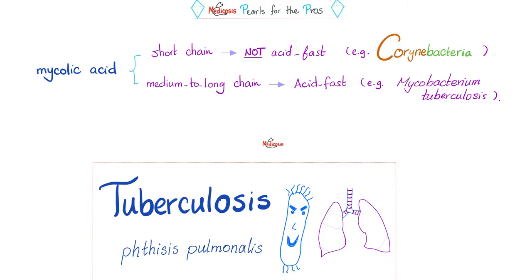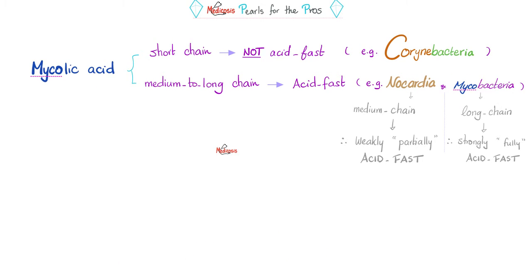In the video about Corynebacterium diphtheriae, I explained why Corynebacterium is not acid-fast — because it has a very short chain of mycolic acid — versus Mycobacterium tuberculosis and Nocardia, which are acid-fast because they have medium to long chain mycolic acid in their cell wall. If you have short chain mycolic acid, you are not acid-fast. Medium chain, like Nocardia, makes you weakly acid-fast. Long chain, like Mycobacteria, makes you strongly or fully acid-fast.